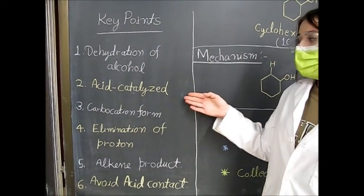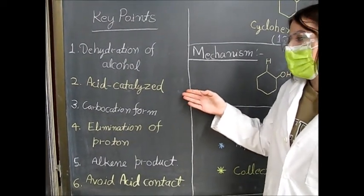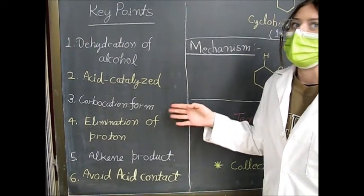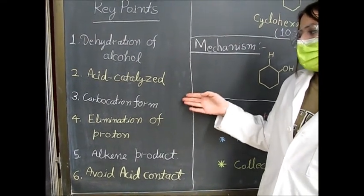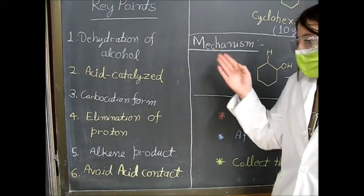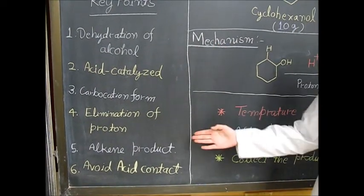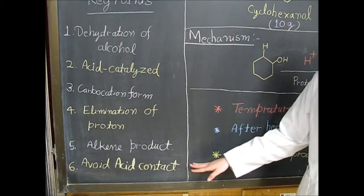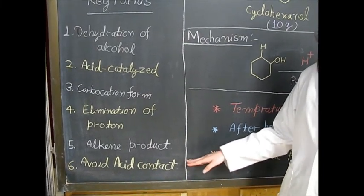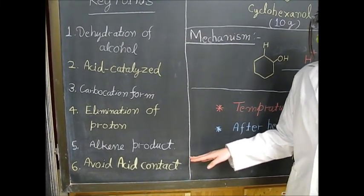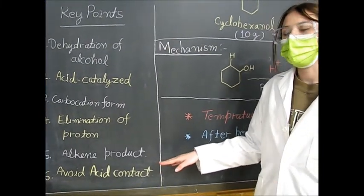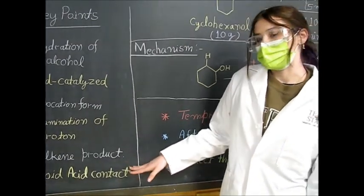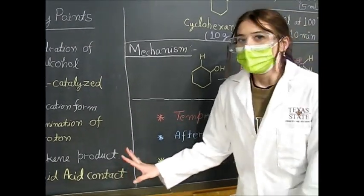During the beginning of the experiment the carbocation is unstable, but with the elimination of a proton, carbocation stability is increased, and we do create an alkene product. The last key point is that since we are using phosphoric acid, it is important that you avoid skin contact with the phosphoric acid.